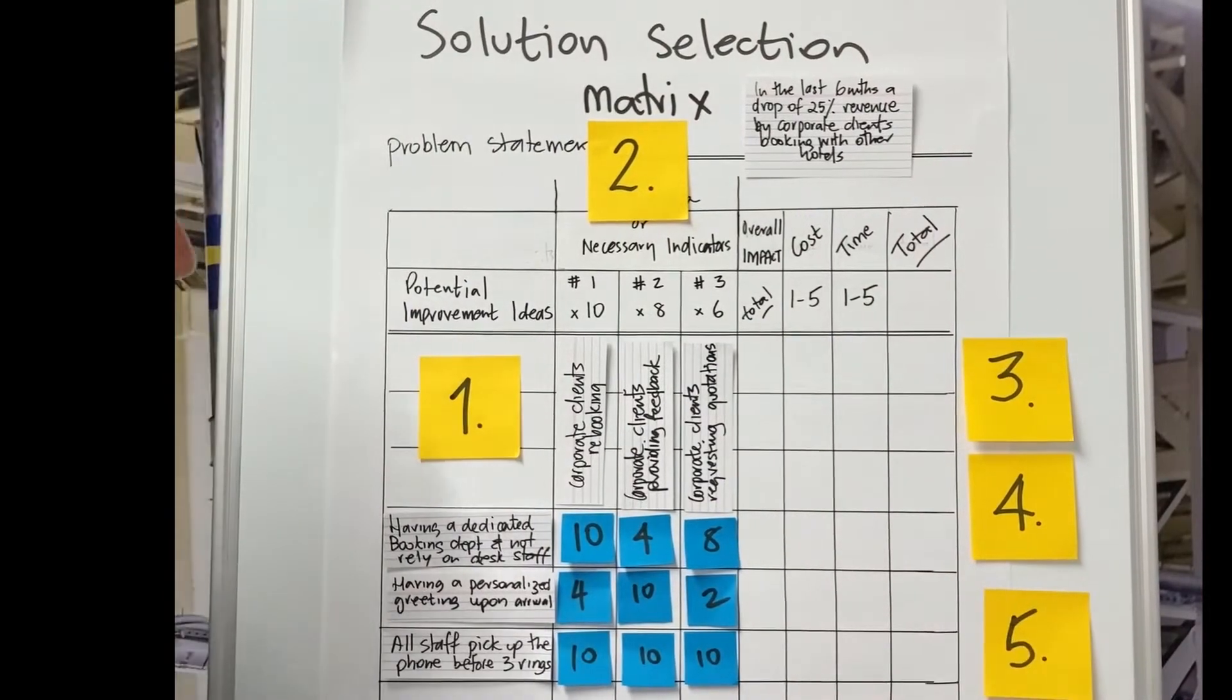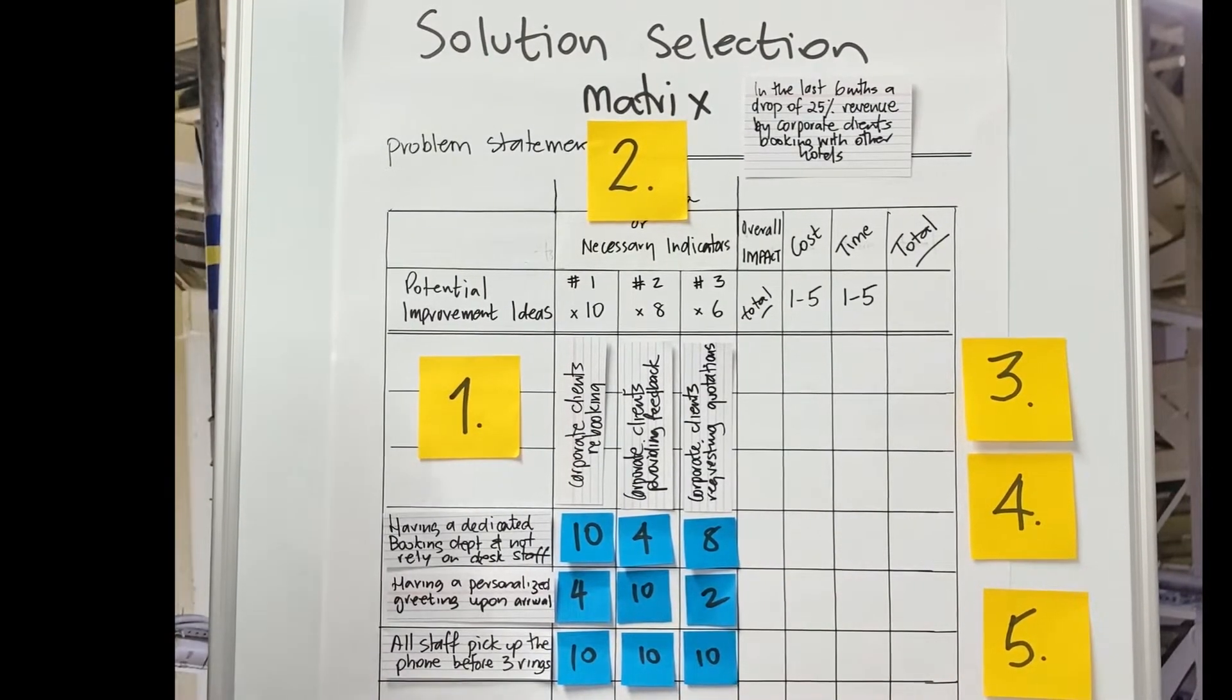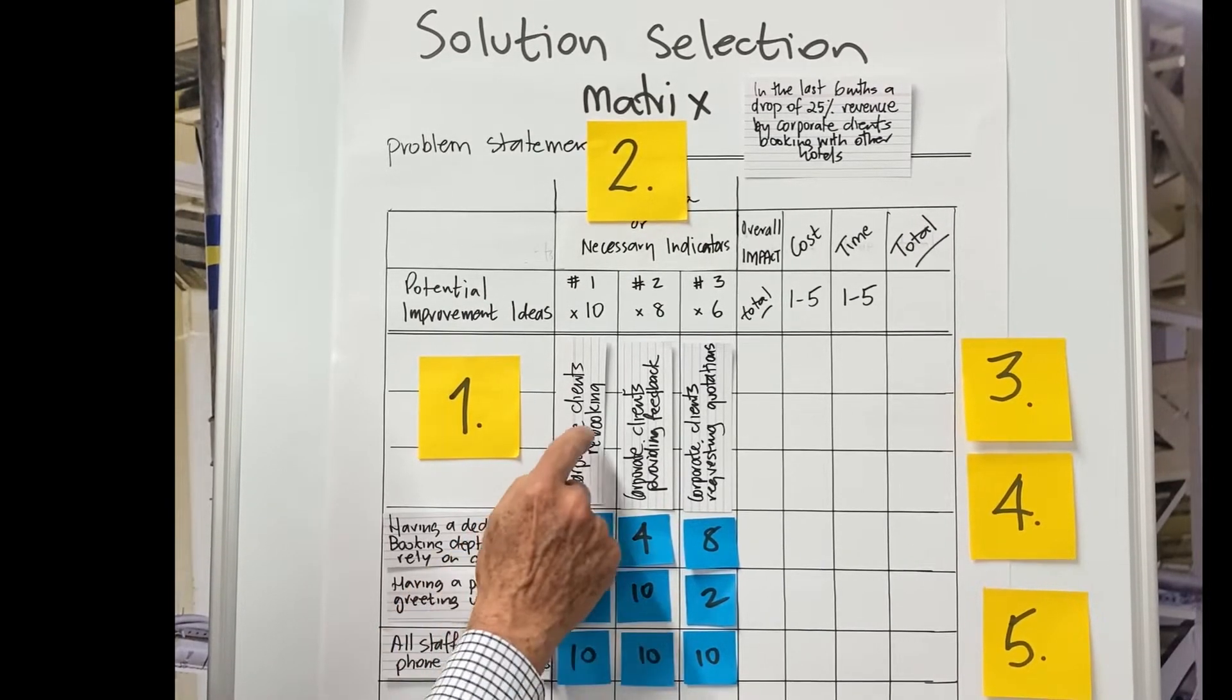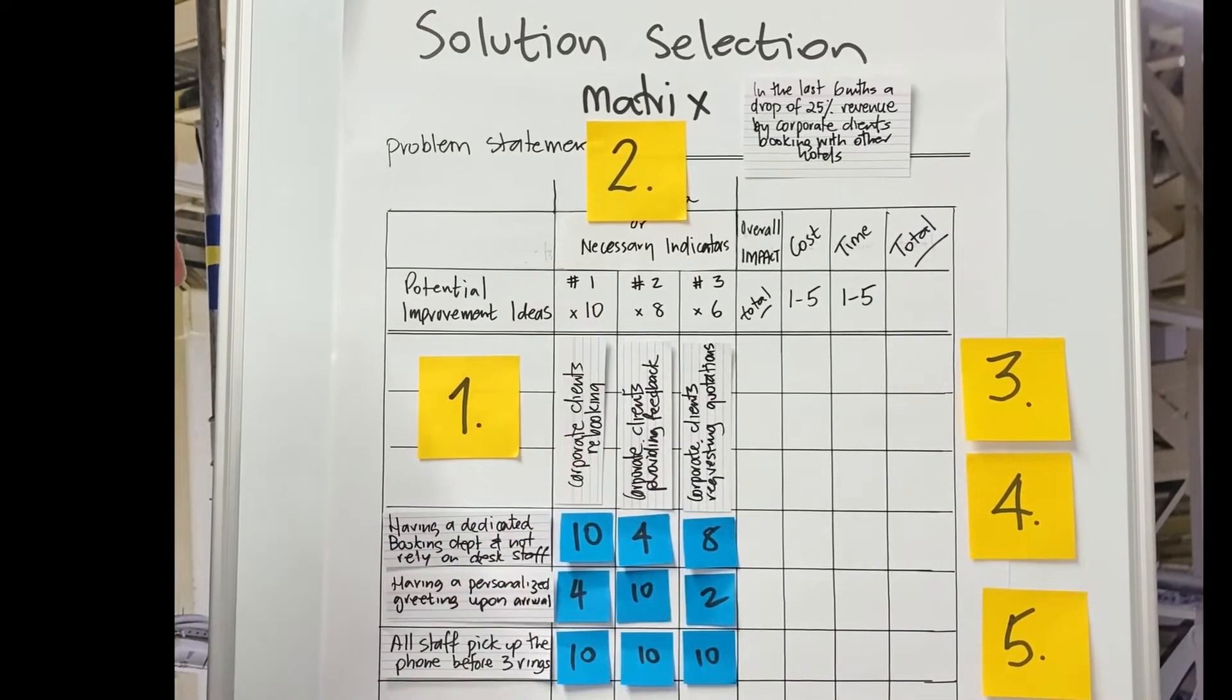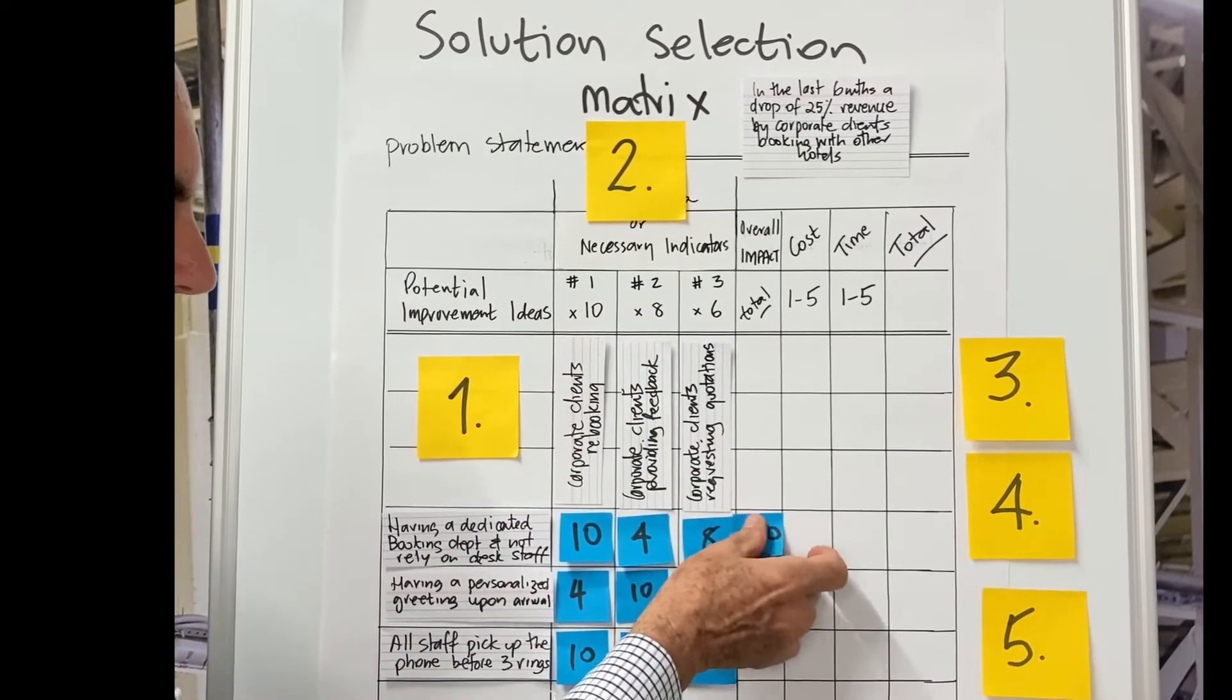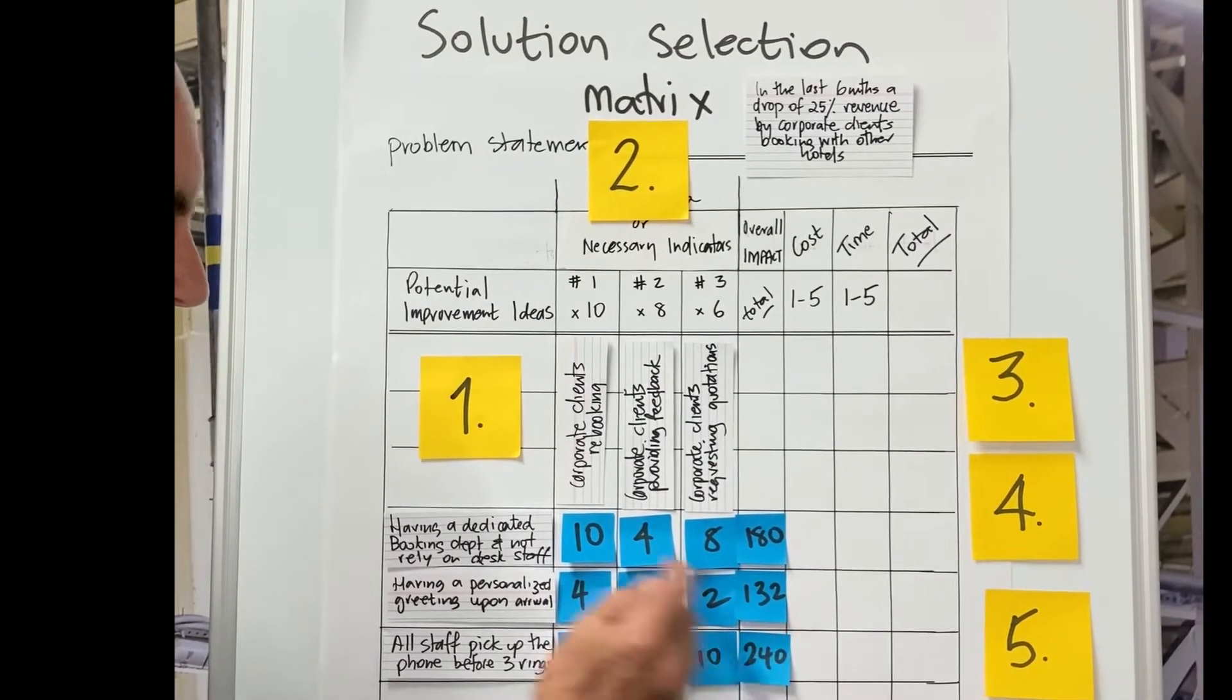So step number five is one of the most time consuming parts of the solution selection matrix. This is where we're going to populate these different cells. So the first thing we do is we've got to take our rating, which is the connection between our improvement idea and the success criteria multiplied by our success factor. So 10 by 10 plus 4 by 8 plus 8 by 6 and then we populate these scores here. We do this for all our improvement ideas that are listed down this column.